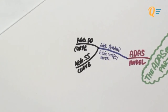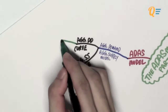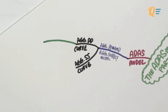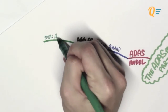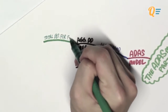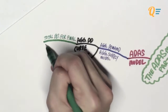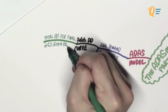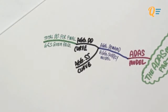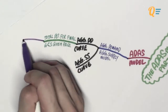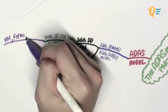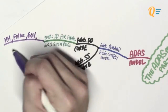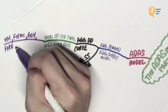So what is aggregate demand? A simple definition would be the total demand for final goods and services given a certain price level in an economy. This total demand actually comes from households, firms, the government in a particular country, and even foreigners.